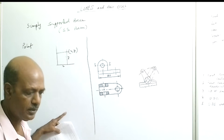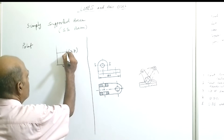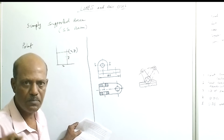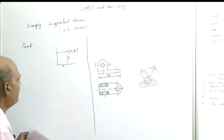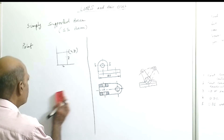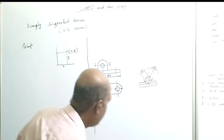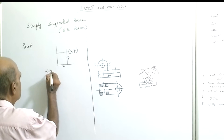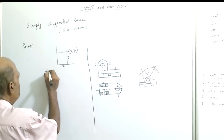Coordinates in a space just specify the location. In practice, we denote a point by using a dot.